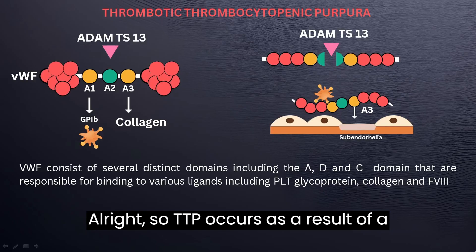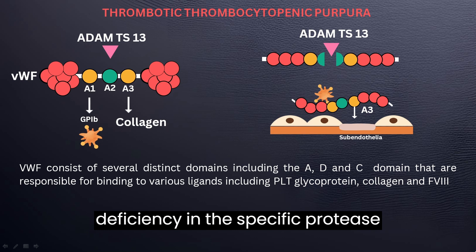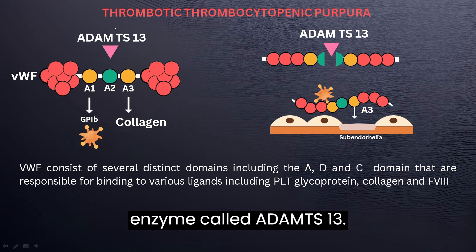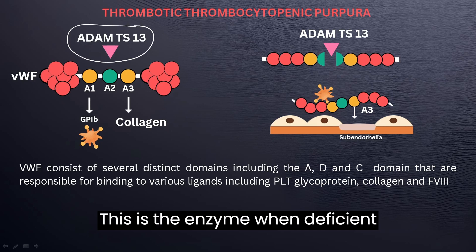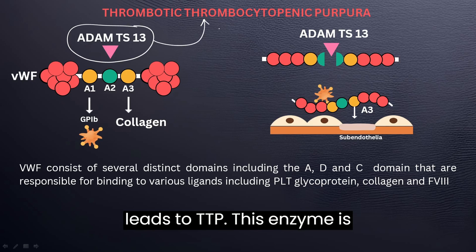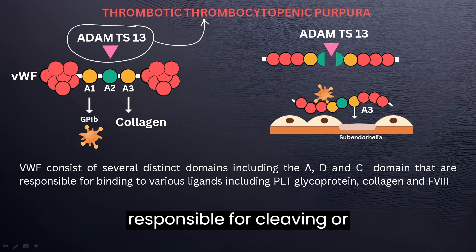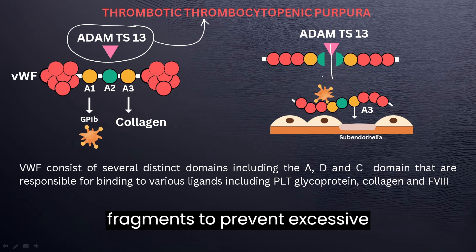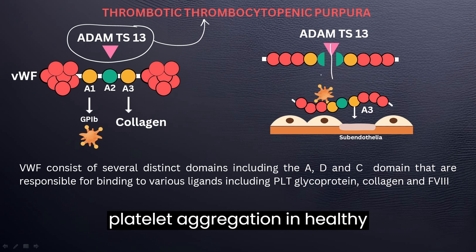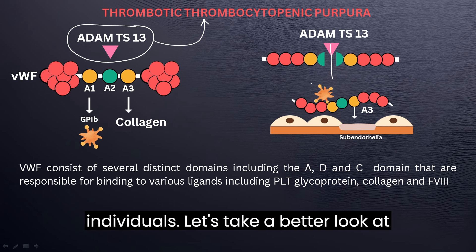TTP occurs as a result of a deficiency in a specific protease enzyme called ADAMTS13. This is the enzyme that, when deficient, leads to TTP. This enzyme is responsible for cleaving or cutting von Willebrand factor into two fragments to prevent excessive platelet aggregation in healthy individuals.